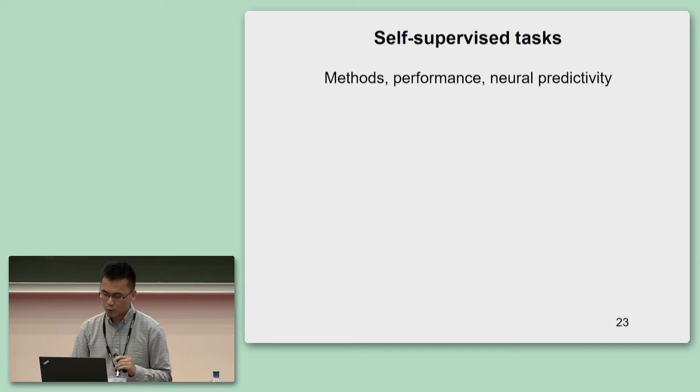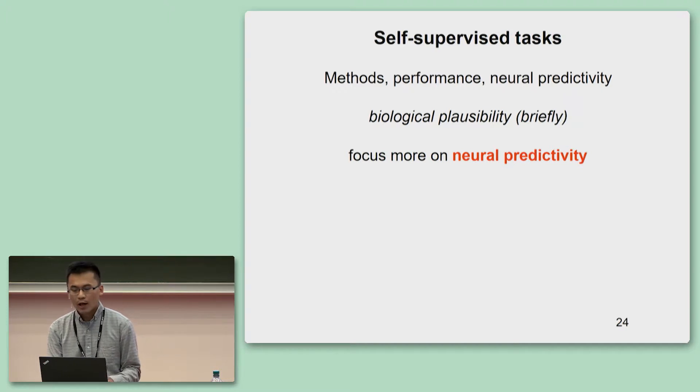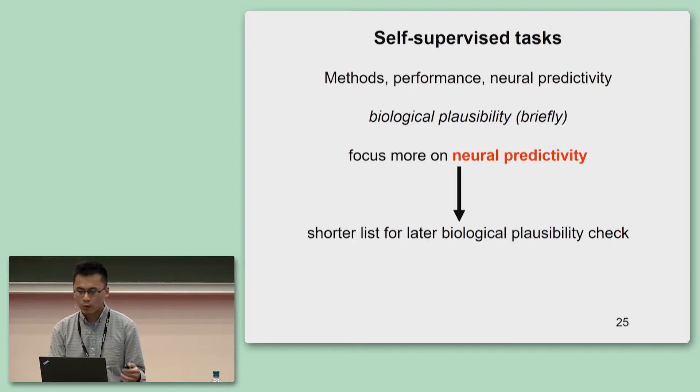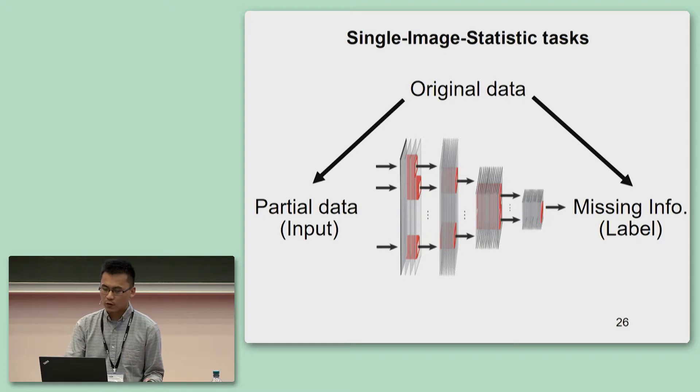Next, I will describe the self-supervised tasks that are more recently proposed. I will show how they train the networks and then examine their performance in both visual tasks and neural predicting tasks. I will also briefly talk about how they can be practically implemented during development, but I choose to focus more on how similar these networks are to brains. And this neural predictivity track can quickly filter out most of the self-supervised tasks and give a significantly shorter list for later biological plausibility track.